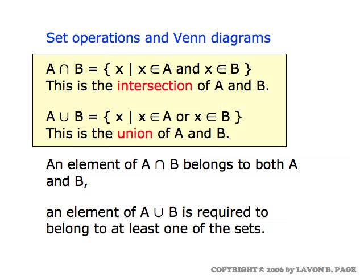The two primary set operations are intersection and union. The intersection of two sets A and B — the symbol for intersection is this upside-down U-shaped figure — and the intersection can be described as the overlap of the two sets, that is the set of all things which belong to A and also belong to B. So the intersection of two sets is what they have in common. To be an element of the intersection, you have to belong to both of them.